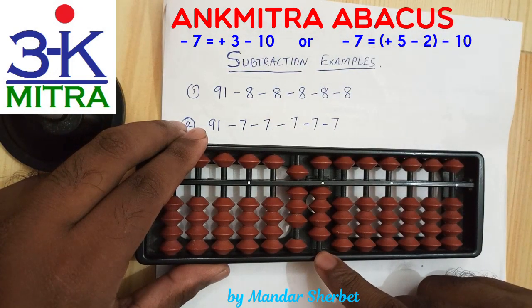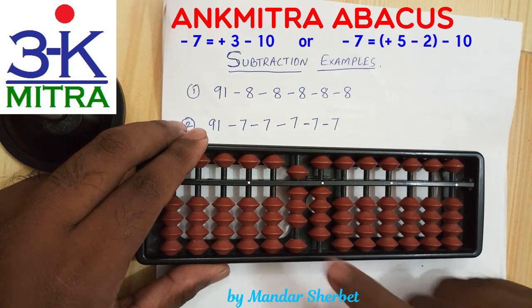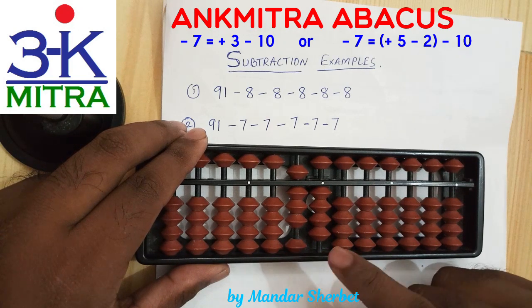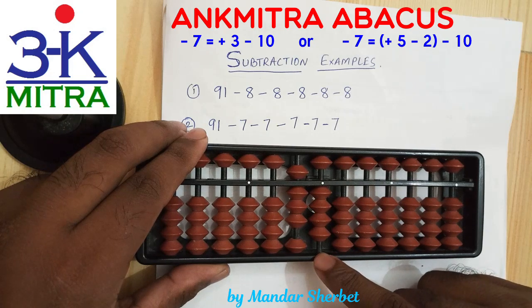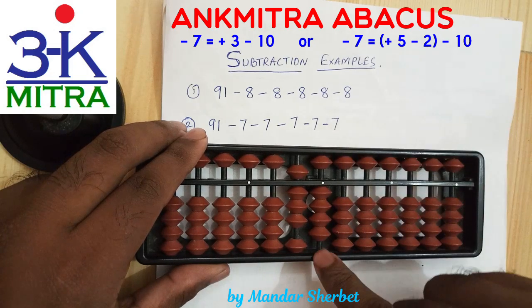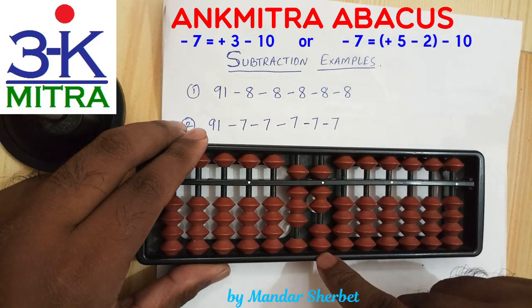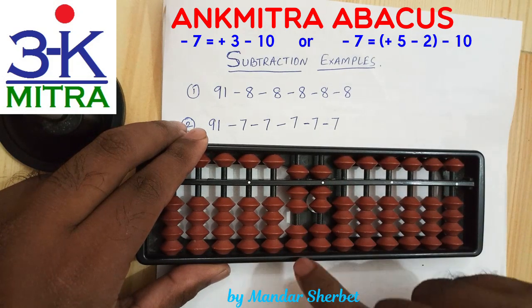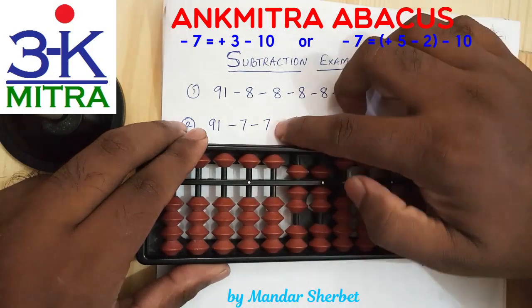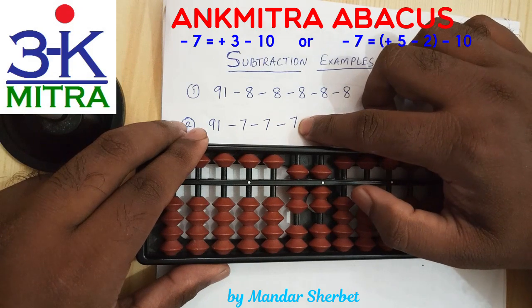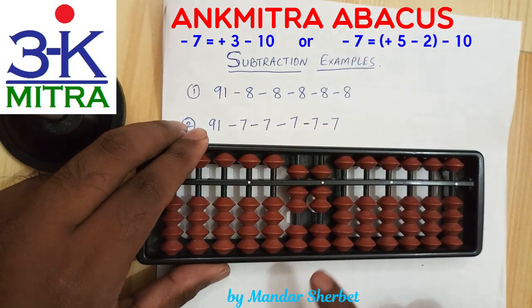Moving to the next 7 — do we have 7 beads available? No, so plus 3 minus 10 must be done. But for doing plus 3 on this rod, we don't have 3 beads available. So we'll use the combination formula: plus 3 will be done using the small friend formula. The small friend formula of plus 3 is plus 5 minus 2. Finishing the plus 3 part, we then do minus 10 on the next left rod so that the subtraction of 7 is done completely.